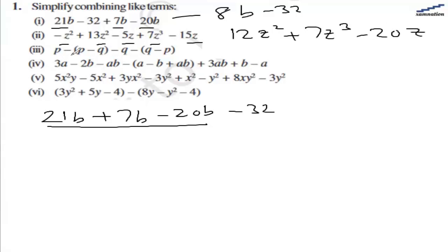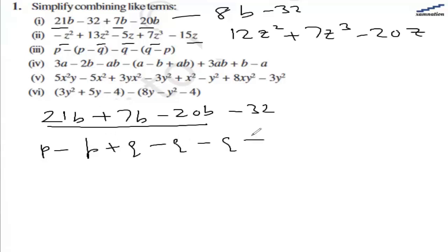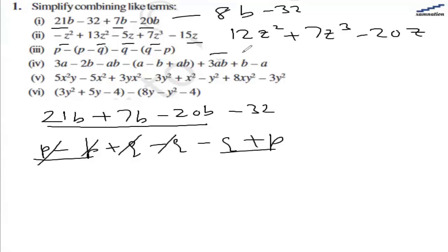For the third one, let's open the bracket first. So we have p minus p, and this will become plus q, minus q, minus q, and plus p. Let's see if we can cancel off. This will cancel off and this will also cancel off. So we have p minus q as the answer.